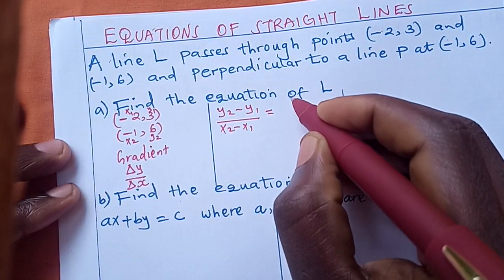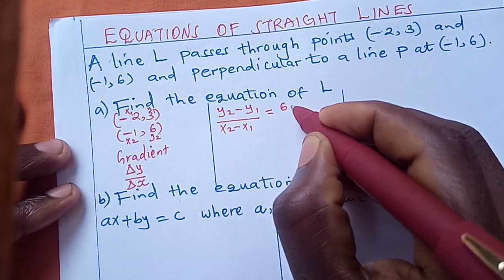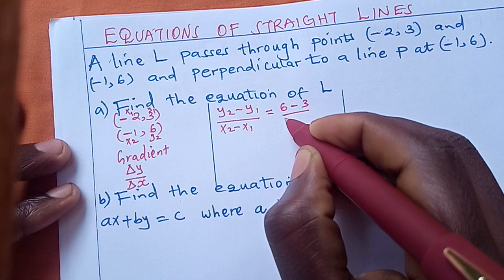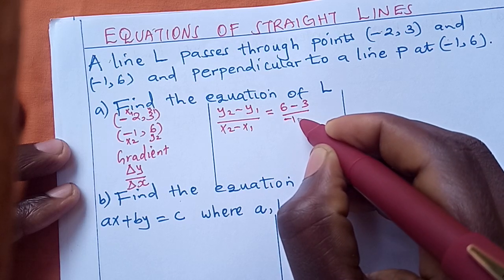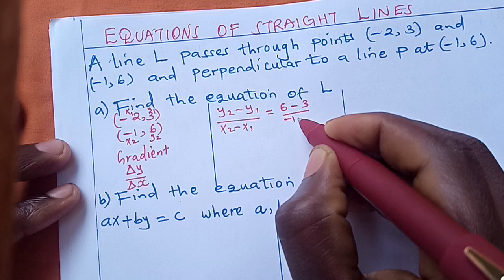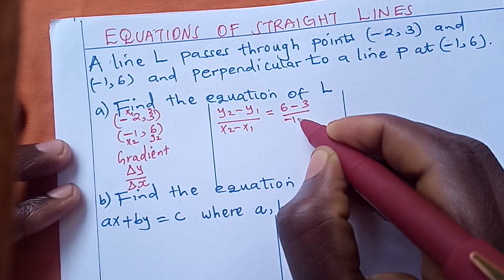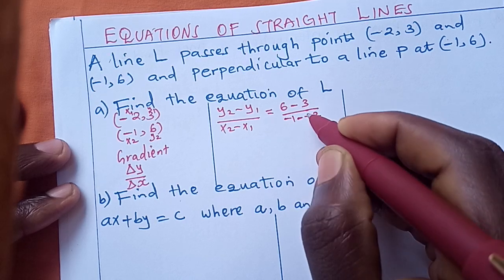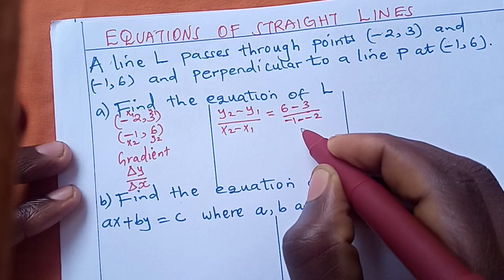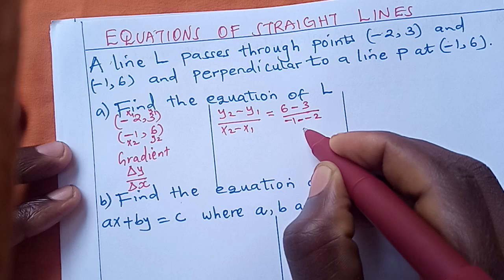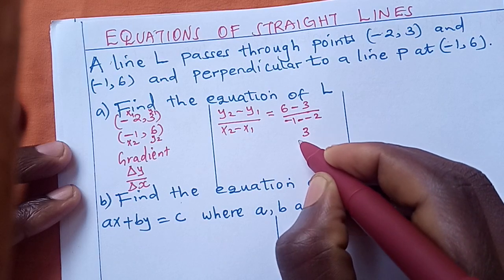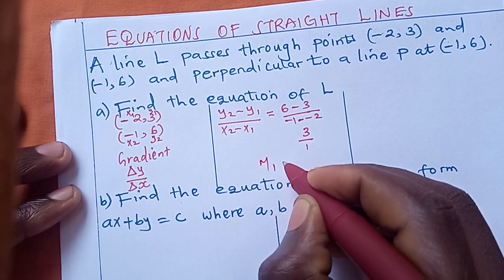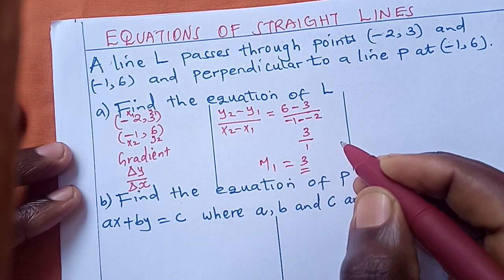y2 is 6 and y1 is 3; x2 is -1 and x1 is -2. So we get (6 - 3) / (-1 - (-2)), which is 3 over 1. So our gradient m1 is in fact 3.